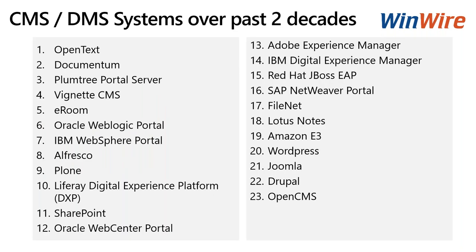When we talk about content and document management systems, we can help migrate from platforms including OpenText, eRoom, FileNet, Lotus Notes, SharePoint, Alfresco, and Liferay to Office 365 cloud. For example, one recent customer was a healthcare organization based in Northern California that had Alfresco, Liferay, and SharePoint on-premises and wanted to migrate all of it into Office 365 cloud. We helped them envision the migration and plan the approach.